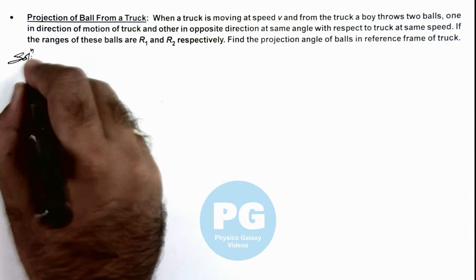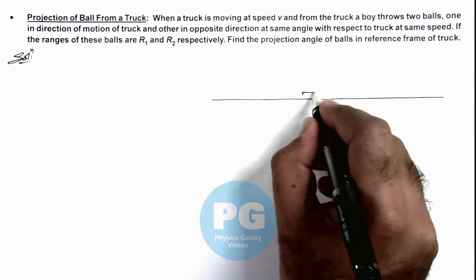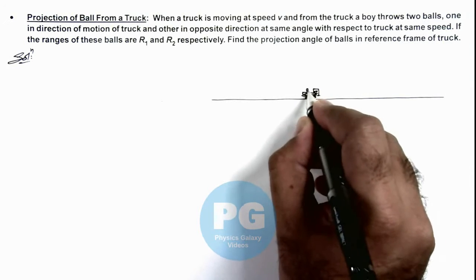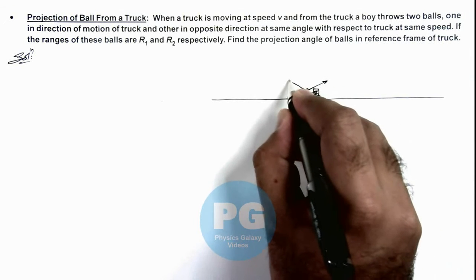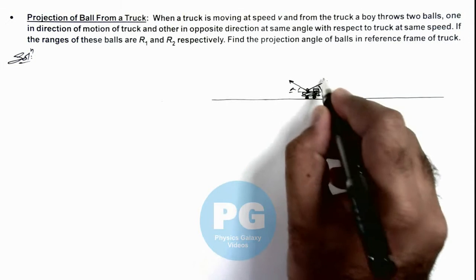Here if we draw the situation, you can see on ground a truck is moving, and from the truck a ball is thrown forward and another ball is thrown backward at same angle of projection alpha and alpha with initial speed u.